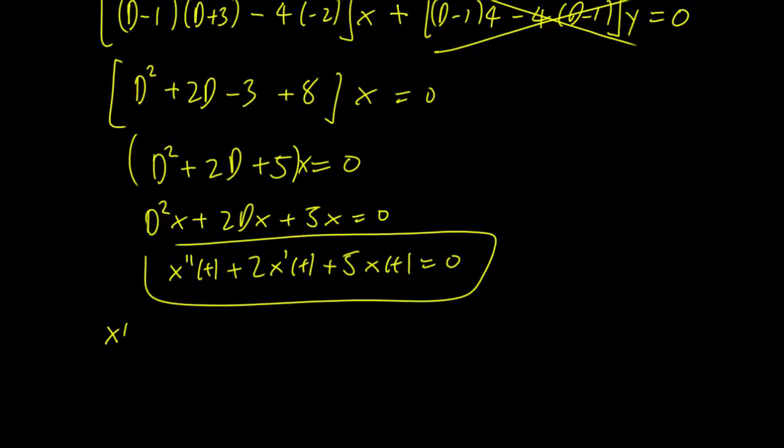And we can use our usual method to solve it. I'm not going to go through all those details here. x = e^(rt) eventually gets us x(t) = c₁e^t sin(2t) + c₂e^t cos(2t).